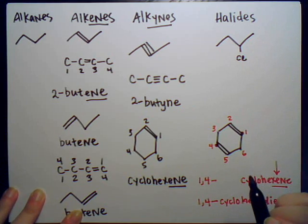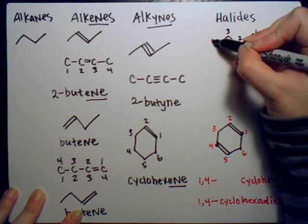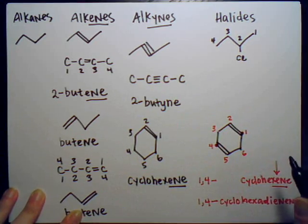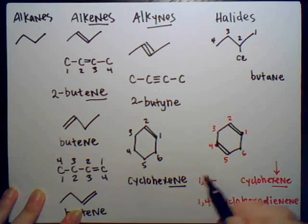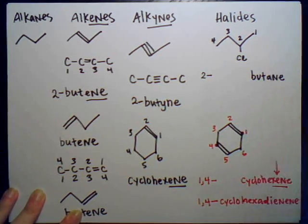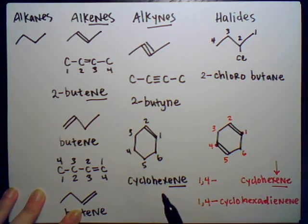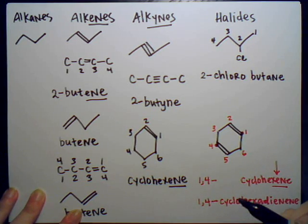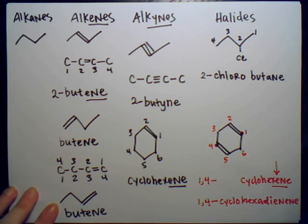For example, if we attach chlorine to carbon two of butane, we number the chain: carbon one, two, three, four. The last name is butane, the substituent is on carbon two, and chlorine becomes 'chloro.' So this molecule is called '2-chlorobutane.' Similarly, fluorine gives '2-fluorobutane,' bromine gives '2-bromobutane,' and iodine gives '2-iodobutane.'